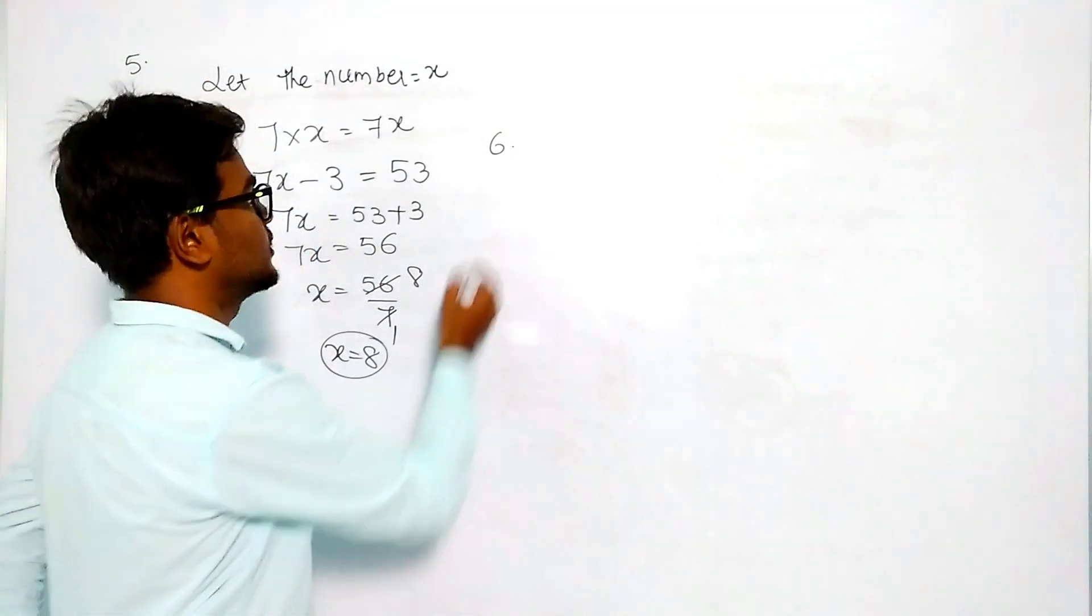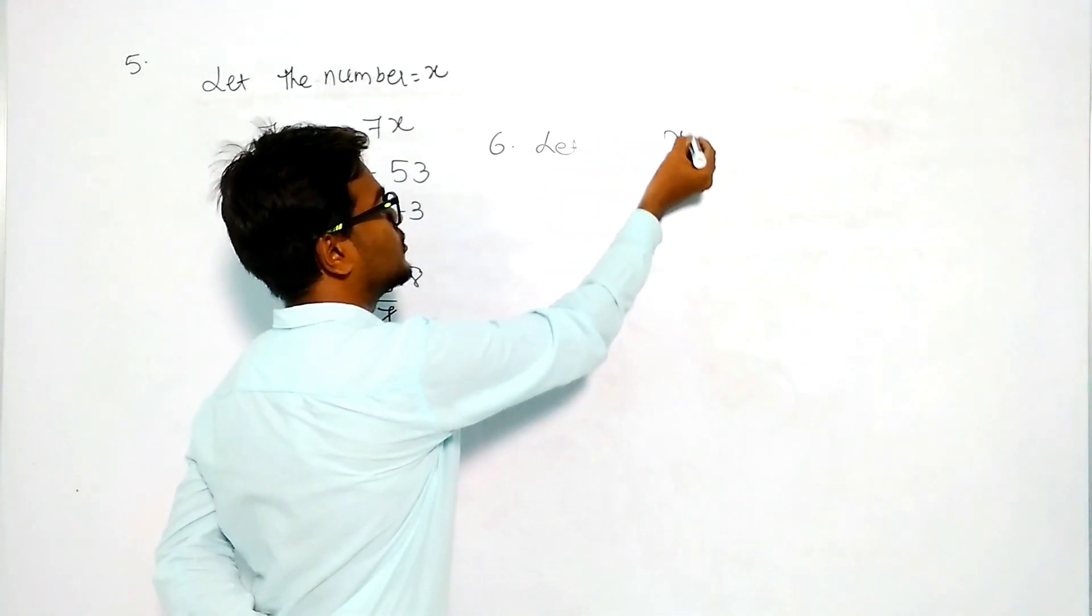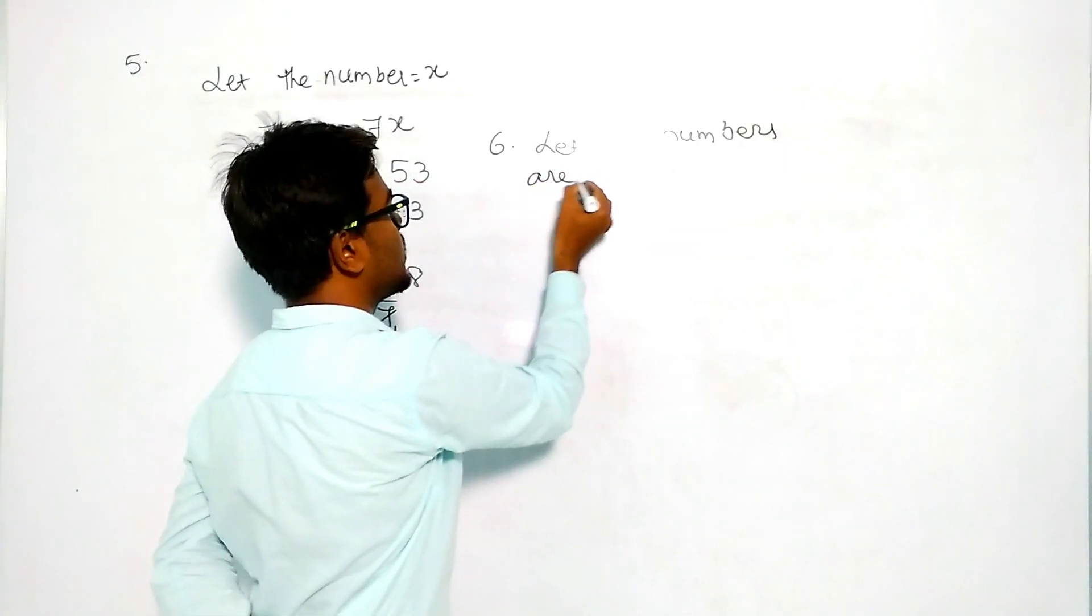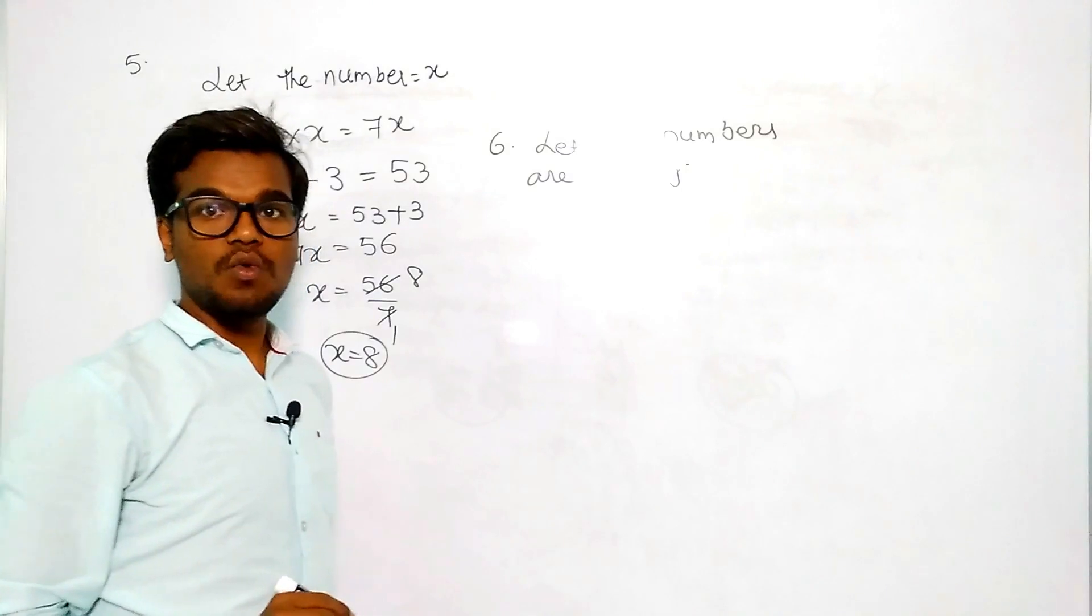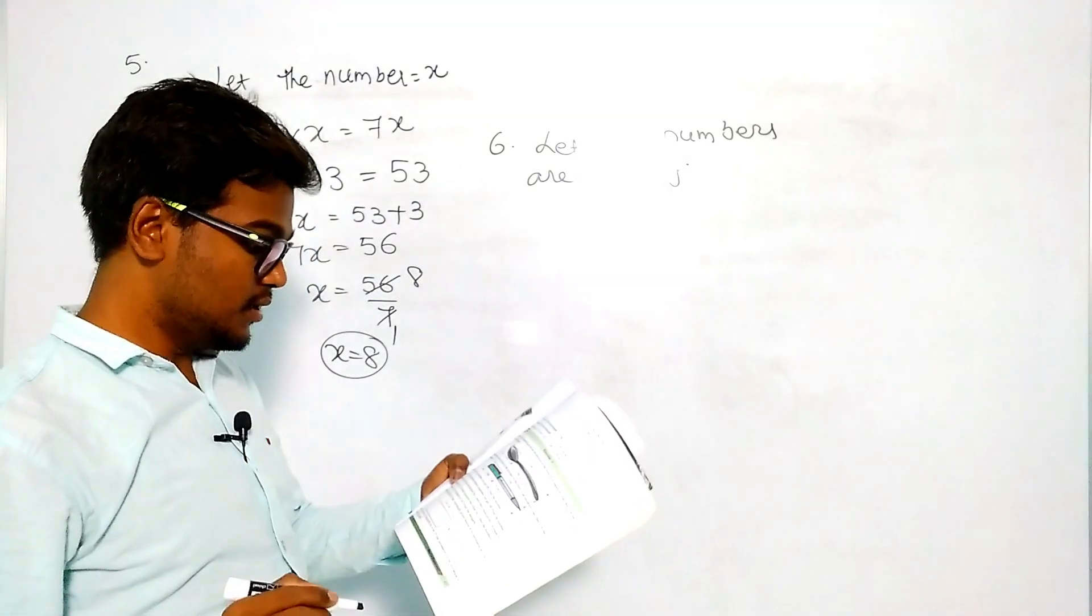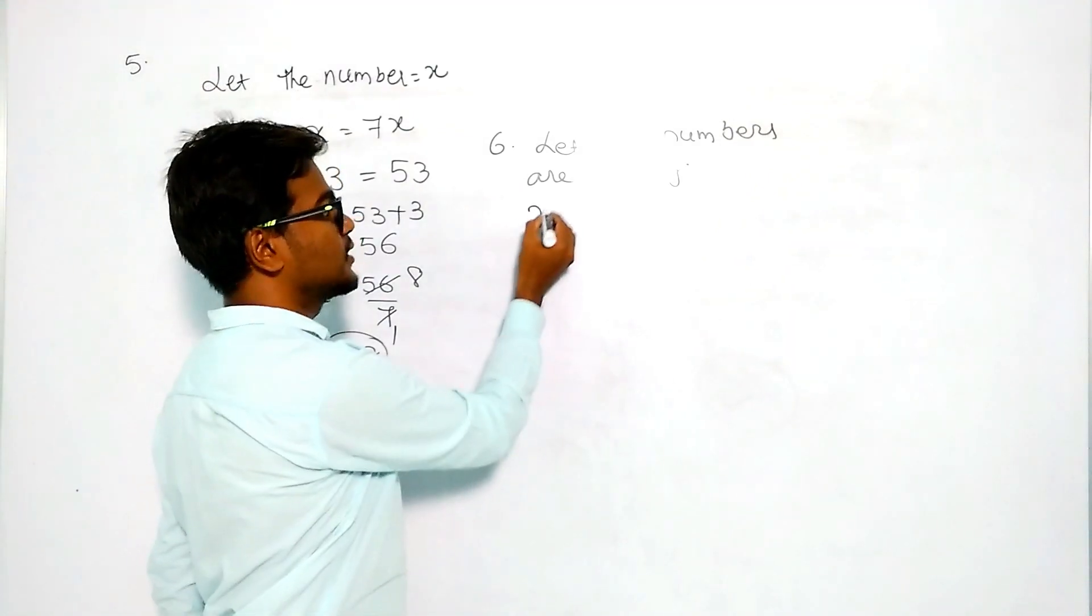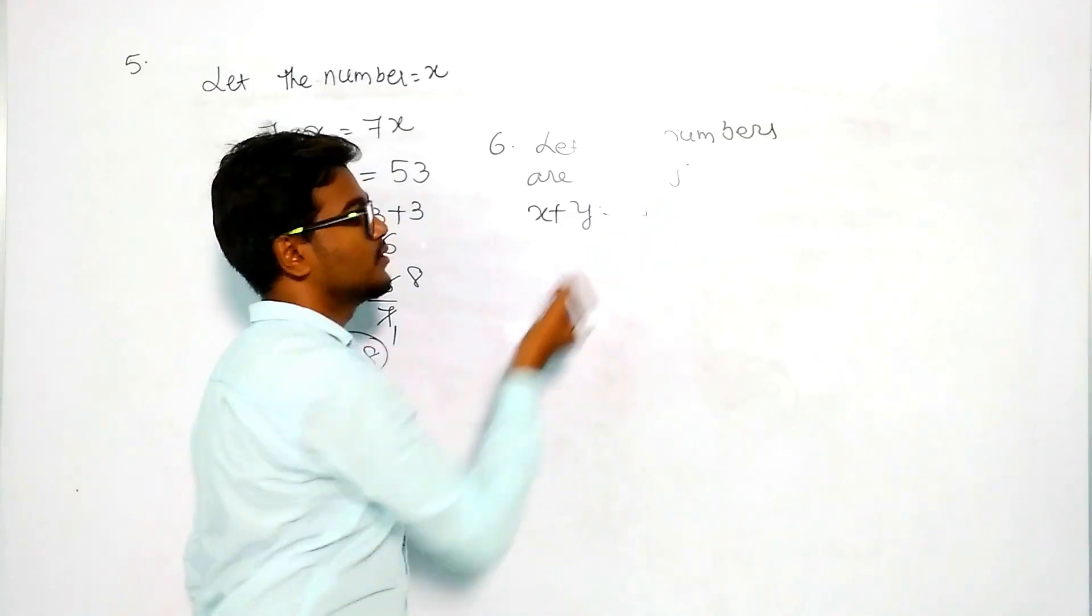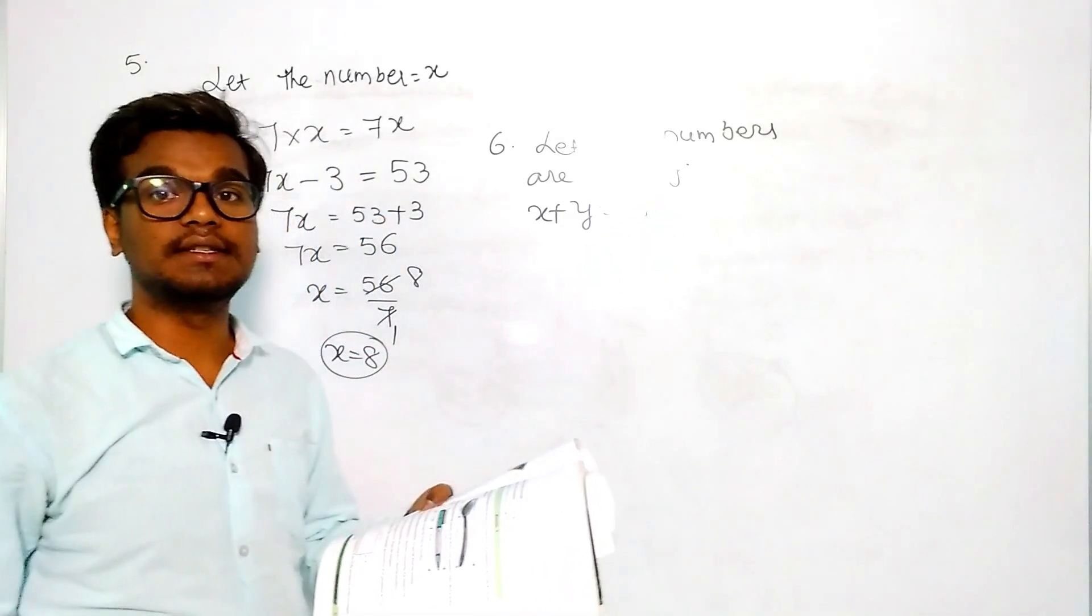Sum of the two numbers - let two numbers be x and y. Then sum of the two numbers is 95, that means x plus y equals 95.